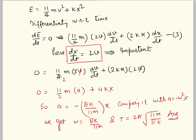I think the solution is now clear. The key point to remember is that when differentiating the energy expression, dx/dt must be the velocity of the object whose displacement is represented by x. Here x is the displacement of the plank, so dx/dt = 2v, not v. Keep this in mind to avoid common mistakes.